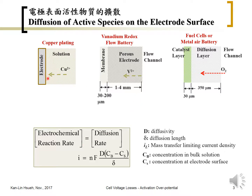At steady state, the deposition or reaction rate equals the diffusion rate, because whatever is consumed is supplied by diffusion. So the electrochemical reaction rate equals the diffusion rate, and thus the current equals the diffusion rate. The diffusion rate is proportional to the concentration gradient between the bulk and the surface. Here, cb is the bulk concentration and cs is the actual surface concentration, and delta is the diffusion length.